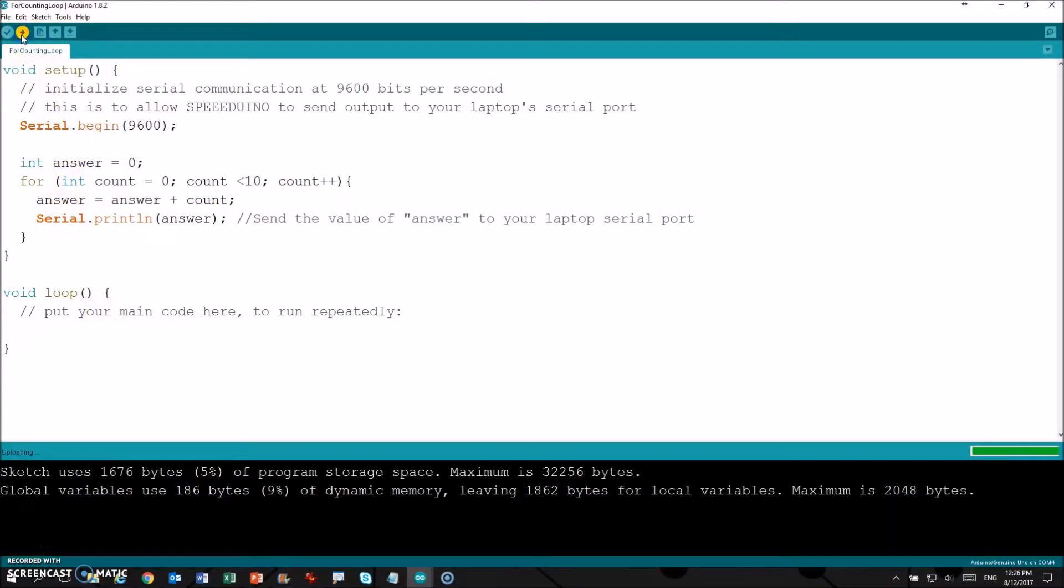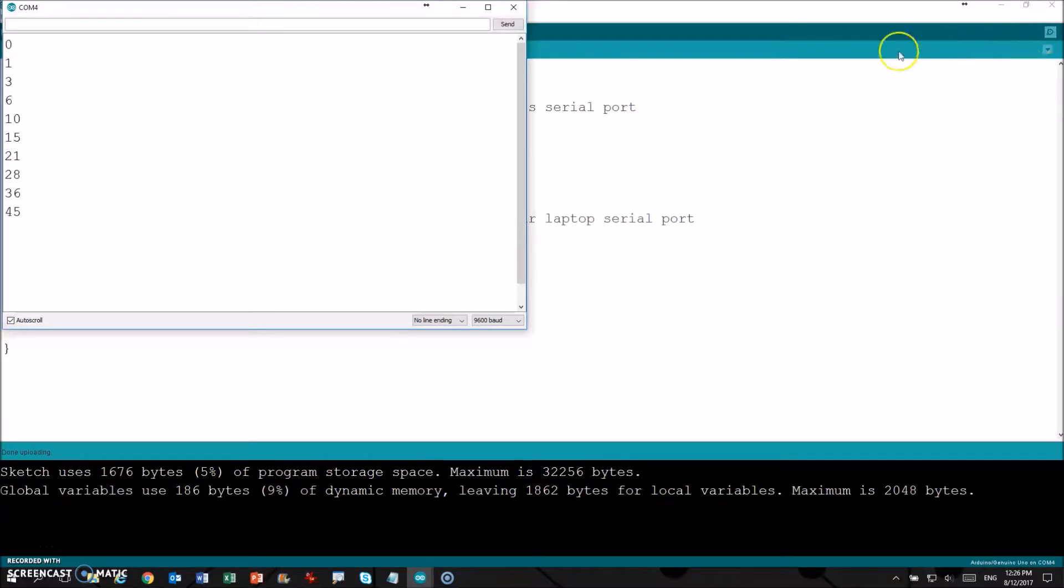Before we start, let's reveal the value of answer in our previous video. When you click on Serial Monitor, you should see the values as shown. The final value for answer is 45. Serial Monitor is a useful tool in Arduino to check for the value of certain variables during troubleshooting.